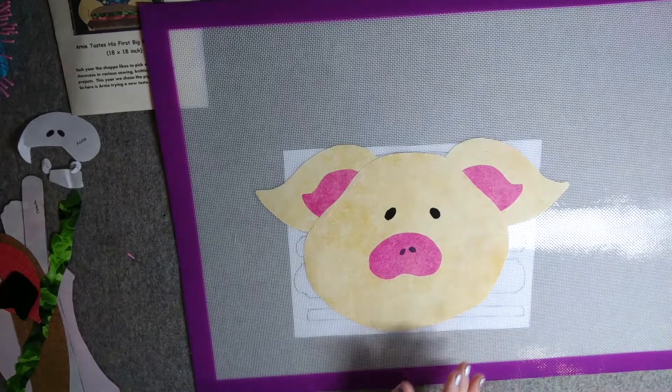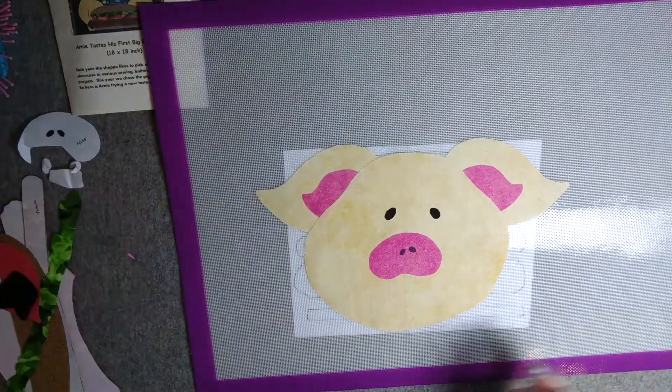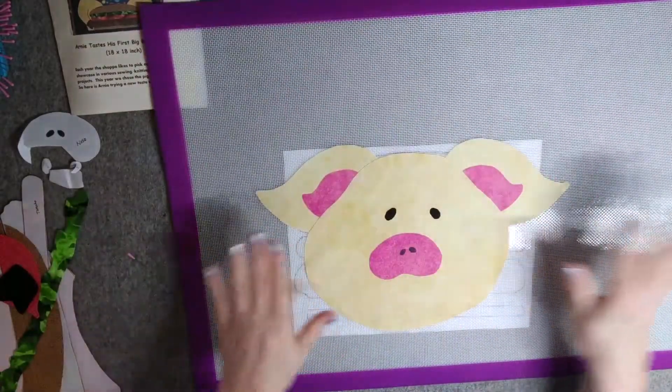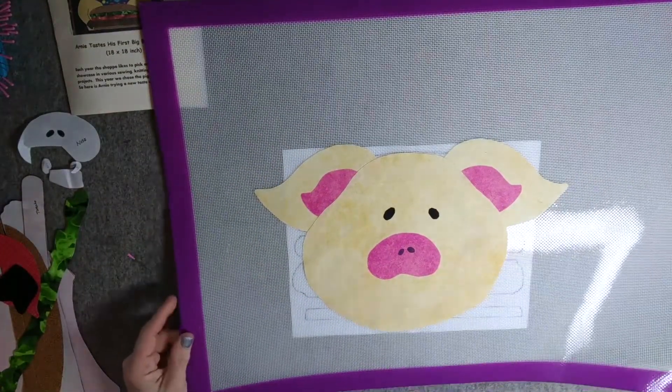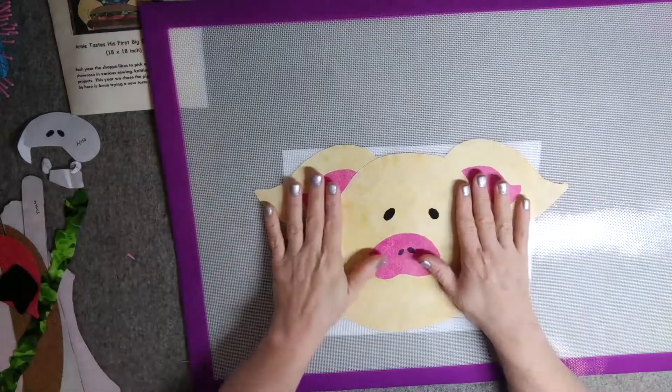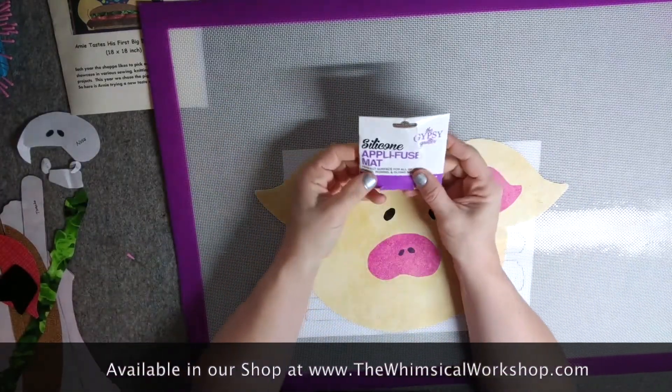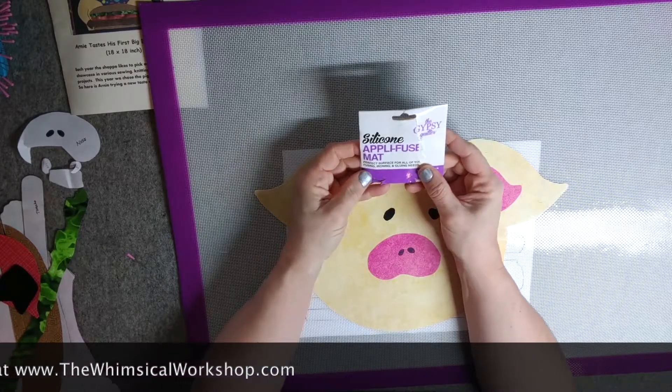I use their Cutting Gizmo, this wool mat on my ironing board. So they do a very good product that I am willing to give this a few more shots. So I would give a thumbs up to the Silicone Applifuse Mat from the Gypsy Quilter.